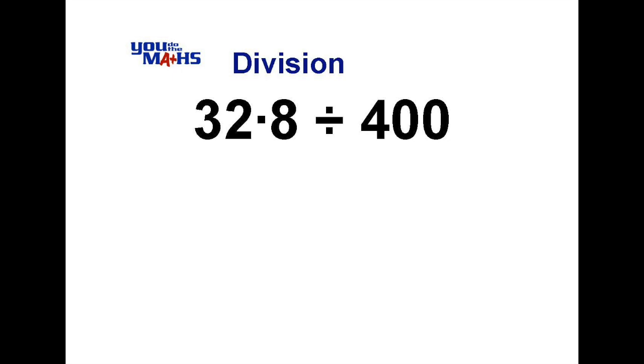So let's first of all divide 32.8 by 4, and we can do that probably in our head or just using pen and paper. We can say that 4 goes into 3 no times with 3 left over, then 4 goes into 32 eight times with no remainder. We then put the decimal point down and we can say that 4 goes into 8 twice. So 32.8 divided by 4 is 8.2.